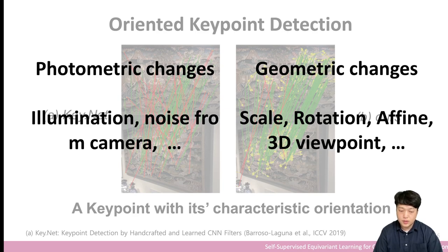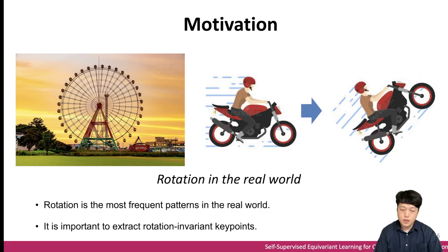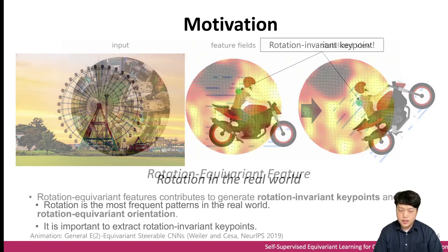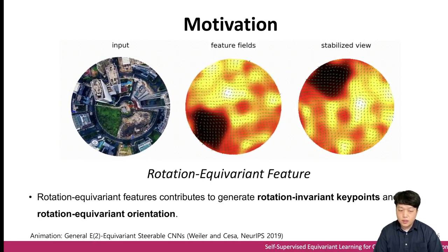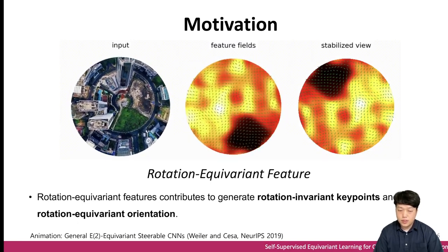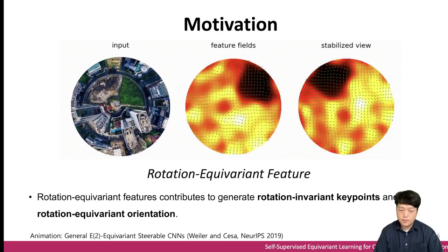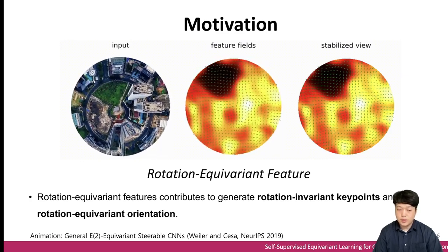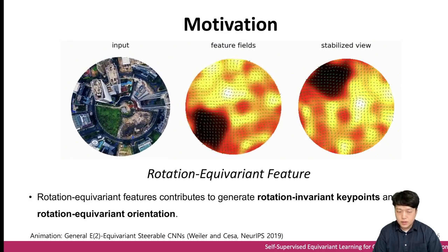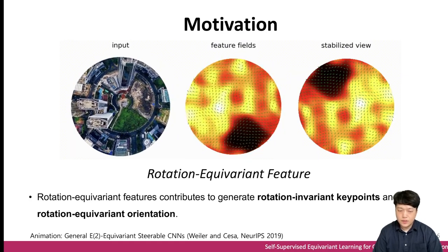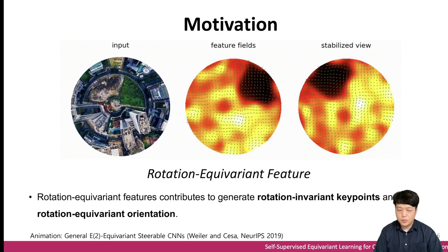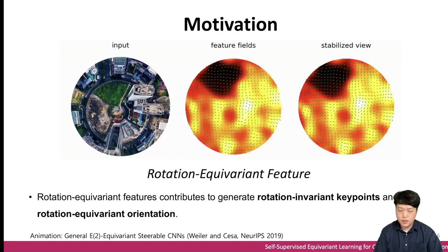We focus on rotational robustness in this paper. Rotation is the most frequent pattern in the real world; therefore, extracting key points invariant to rotations is the first step toward extracting robust key points. Second, rotation equivariance is an important property to achieve rotational invariance. In this work, we bring the concept of steerable CNN to the oriented key point detection problem. Structurally guaranteed equivariant features, invariant mapping, and equivariant information preserving are keys to achieving those objectives.